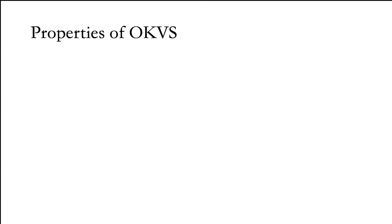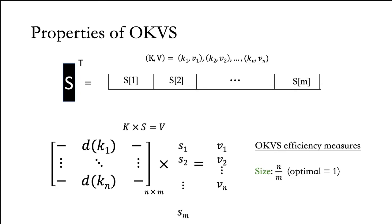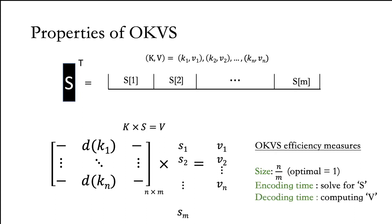Let's look at some properties of an OKVS. Given an OKVS S, the first thing we're interested in is compactly encoding the n key-values. So if the OKVS has size m, we want m to be as close to n as possible. We can represent the encoding and decoding in terms of matrix multiplication. During encoding, we need to determine each row of matrix K, where each row is associated with one key. We solve for vector S, and K times S gives us the set of values. If the values belong to some field and K consists of elements of the same field, we end up with a vector S consisting of m field elements.